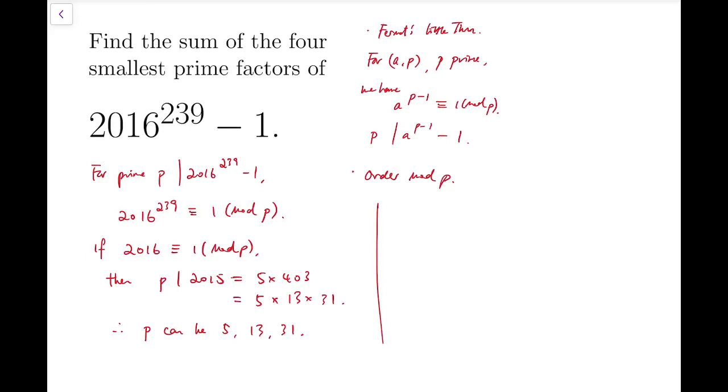Now we need to use those two tools. The thing we can say is that because 239 is a prime number, it must be exactly the order mod p.